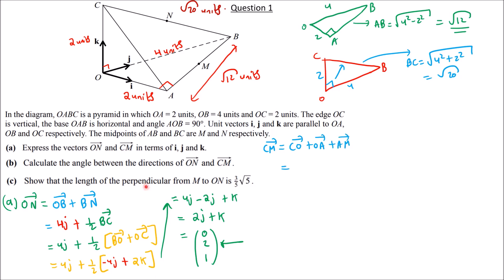CO has length 2, direction opposite K, so it is negative 2K. OA has length 2, direction I, so it is +2I. AM is half of AB because M is the midpoint of AB.